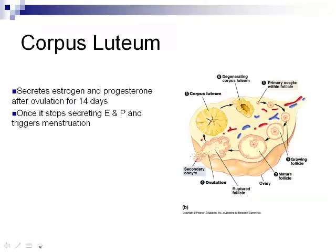The corpus luteum forms on day 14 after ovulation and keeps secreting estrogen and heavily secreting progesterone. Unfortunately, it eventually stops secreting these hormones.